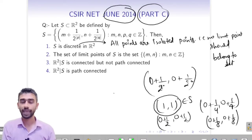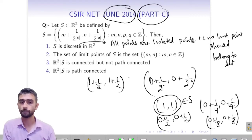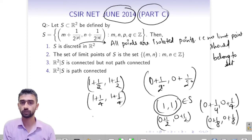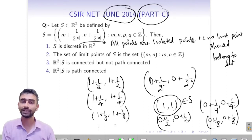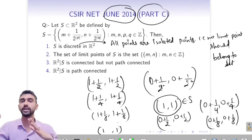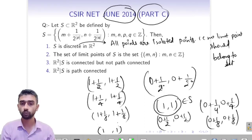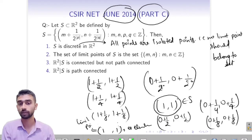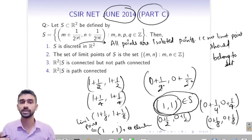Now (1, 1) belongs to S. If I take m = n = 1 and keep increasing p and q: 1 + 1/2, then 1 + 1/4, then 1 + 1/8, and so on. The neighborhood of (1, 1) contains infinitely many elements, so (1, 1) is a limit point. Since (1, 1) belongs to the set, the discrete condition fails — option 1 is incorrect.